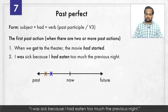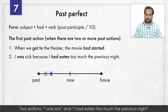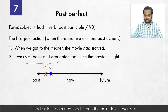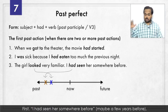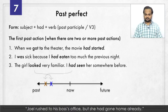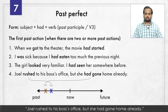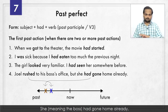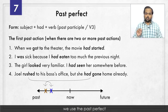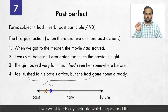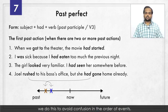Here's another example: I was sick because I had eaten too much the previous night. Two past actions – I had eaten too much first, then the next day I was sick. Next: The girl looked very familiar – I had seen her somewhere before, maybe a few years ago, so she looked familiar. Joel rushed to his boss's office, but she had gone home already – so when Joel arrived, she wasn't there. Just remember that when we have two past actions, we use the past perfect to clearly indicate which happened first, to avoid confusion in the order of events.